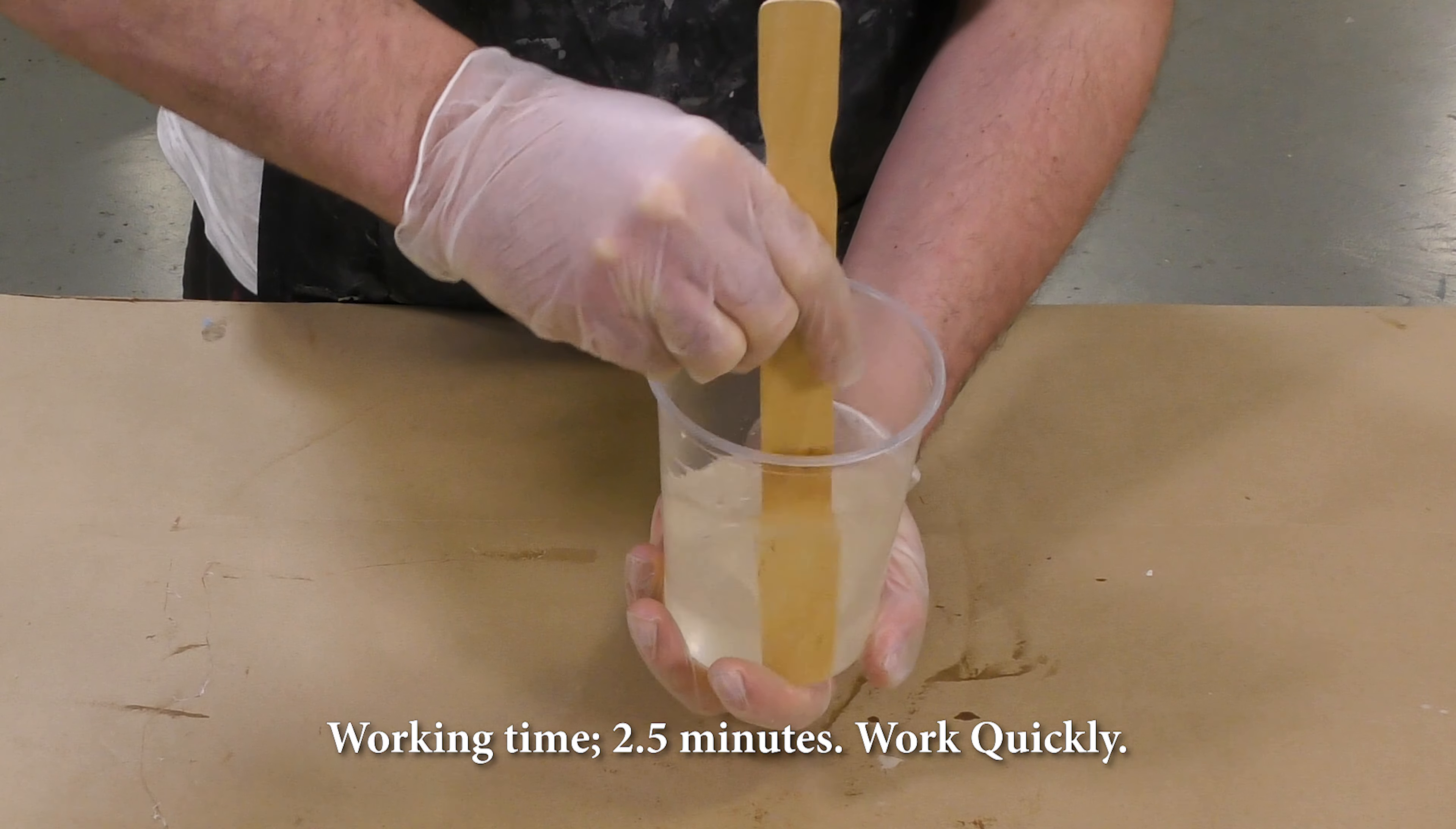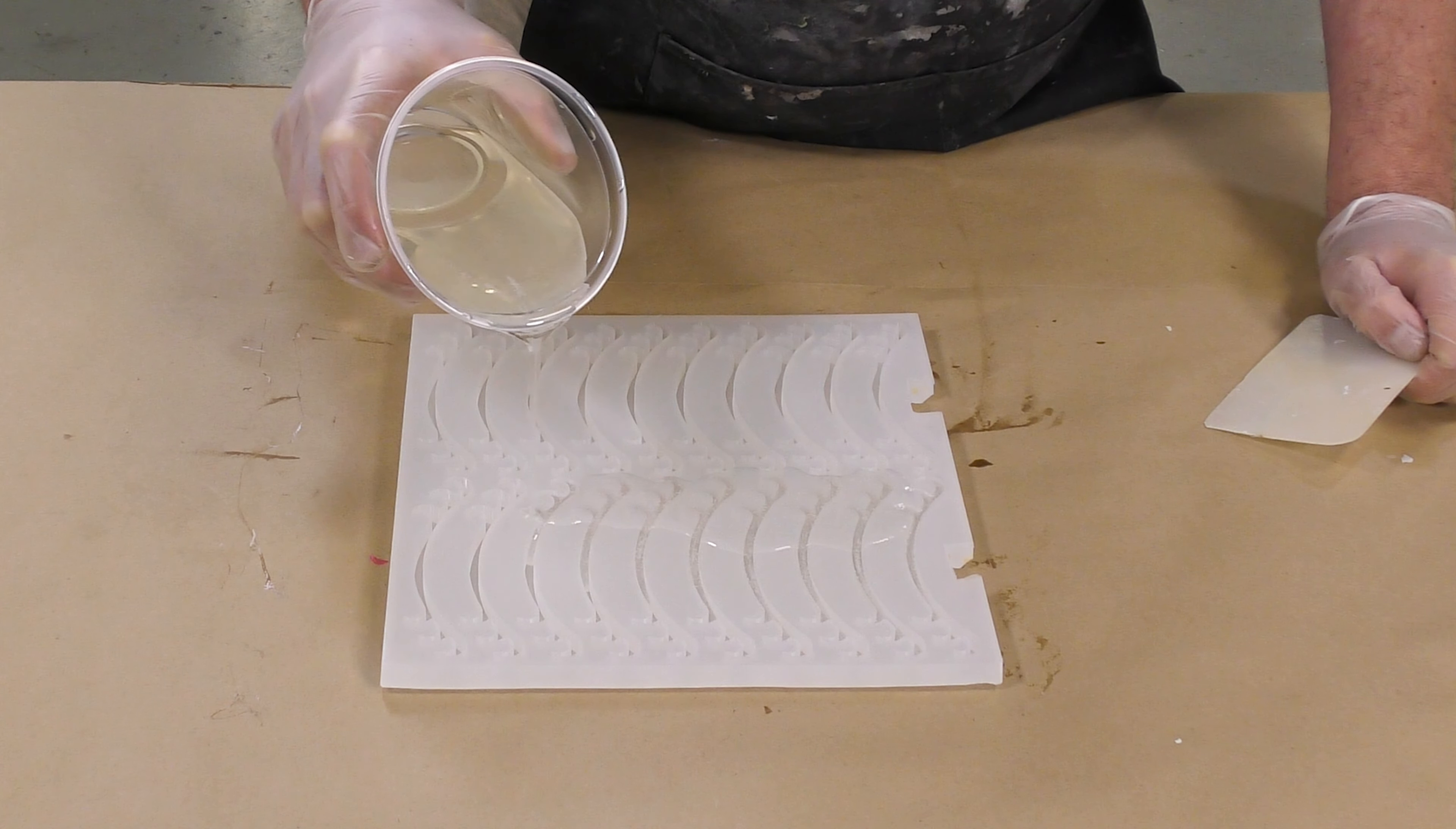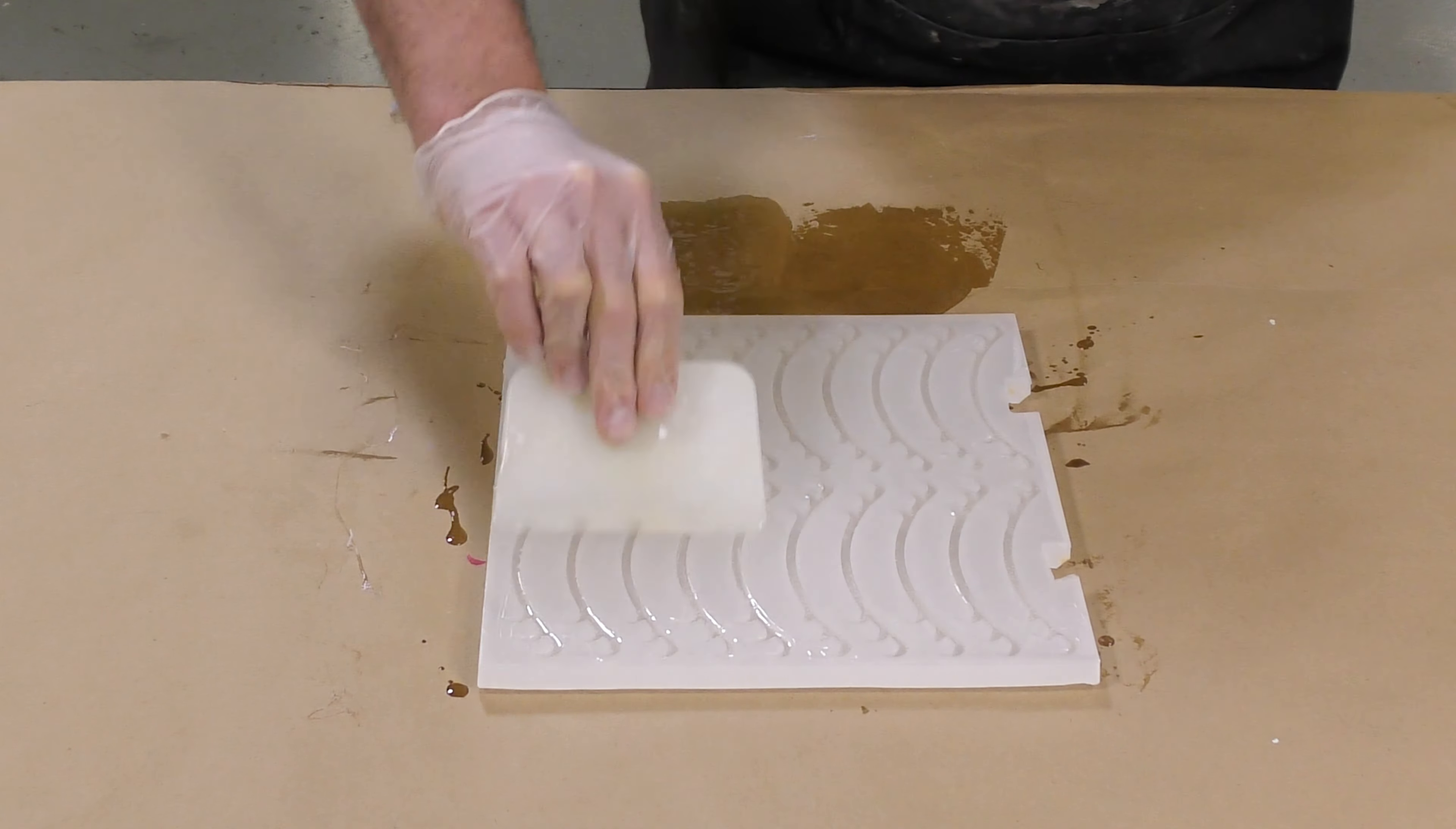We can then combine the A and B in a clean mixing container. As always, scrape the sides, scrape the bottom of your mixing container. Keep in mind the short working time, two and a half minutes. Once you mix thoroughly, we can pour the material inside the mold. I'm simply going to pour right over the top here. I'm going to use a squeegee to push any of the extra material in any cavities, crevices that weren't filled. Any of the extra material is simply scraped off the mold.